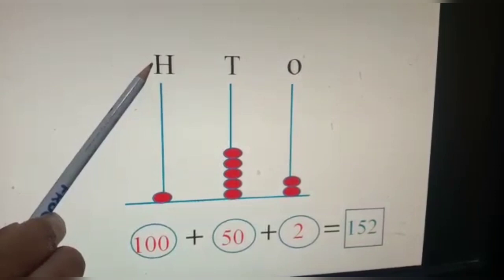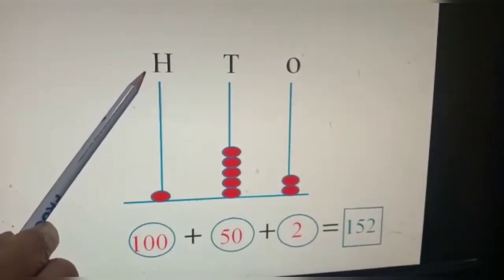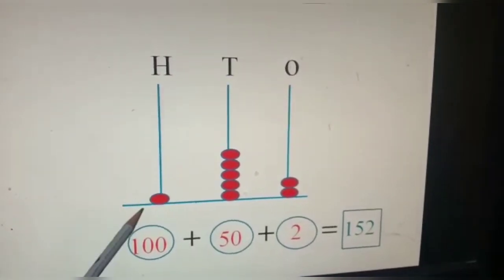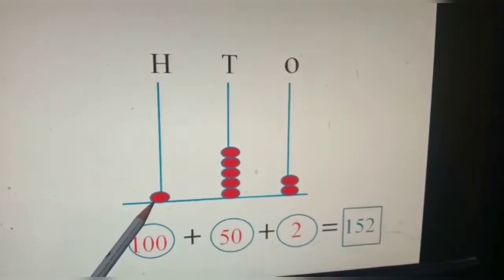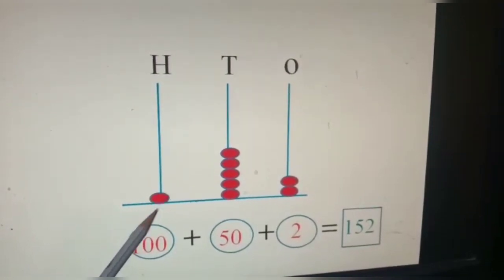The next is the hundreds place. In the hundreds place, we have one bead. That is one hundred. So, we write here, hundred.